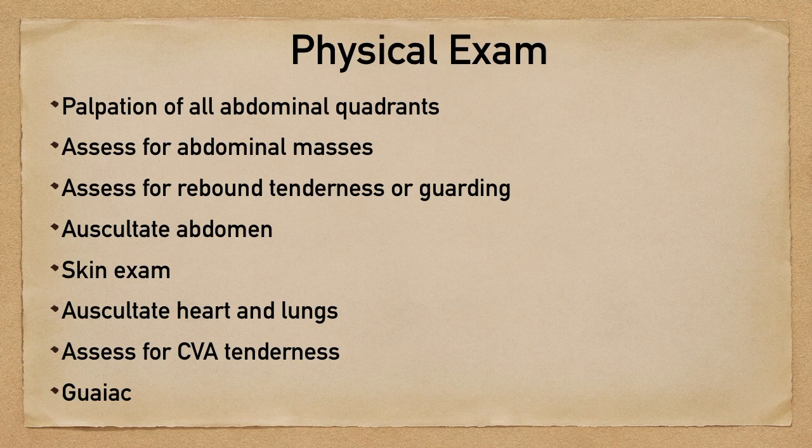Don't forget the thorax either — listen to the heart and lungs. Remember that there are thoracic causes that can lead to upper abdominal pain. You can also check for CVA tenderness. And if you're worried about a GI bleed, you might need to do a guaiac test if you feel that's necessary.